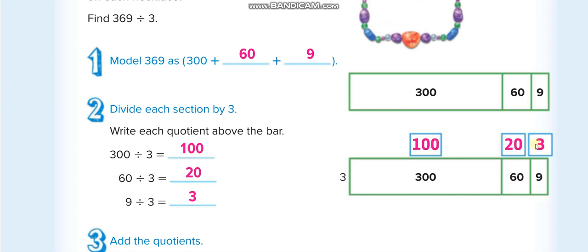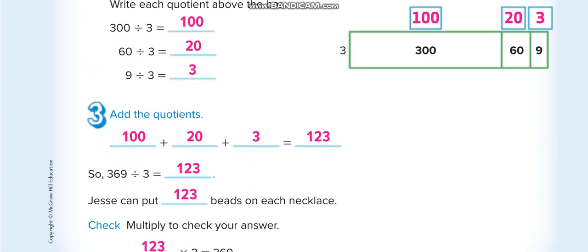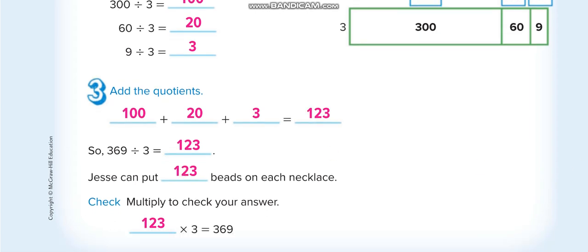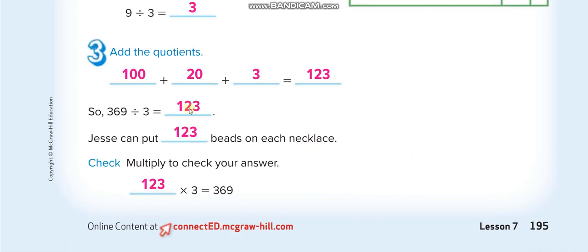Then 60 divided by 3 is 20, and 9 divided by 3 is 3. At the end we add these three quotients: 100 plus 20 plus 3, so 123. To check our answer, simply multiply the quotient with the divisor. If you get the dividend — which we get here — it means your answer is correct.